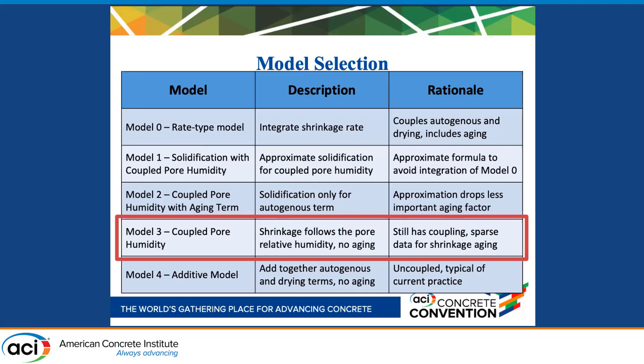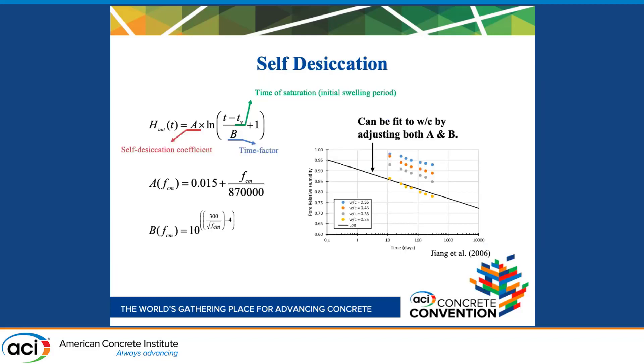Phase two of research involved developing the shrinkage models and optimizing them. I will just explain model three, which was titled "coupled pore humidity," since it ended up being the model we chose to present. Model three is essentially a pore relative humidity model with a total shrinkage coefficient.